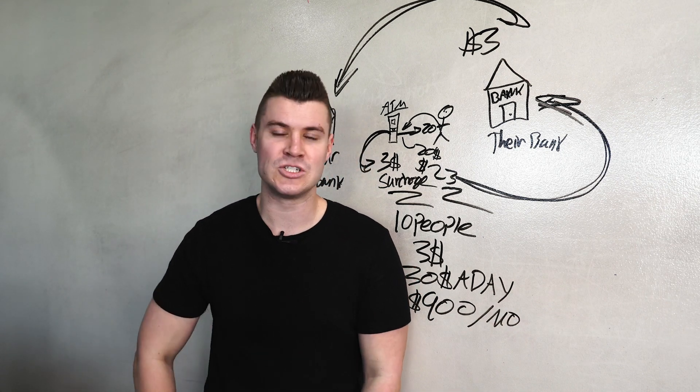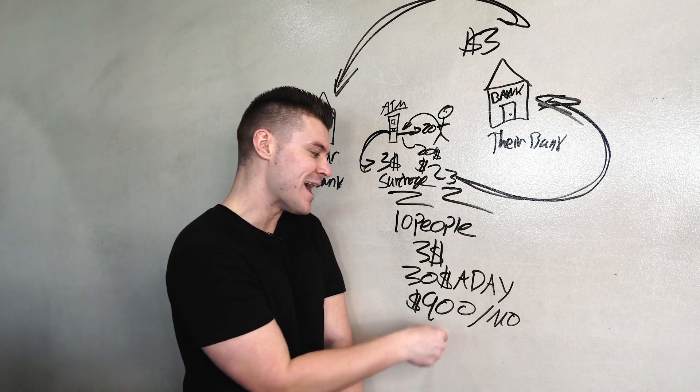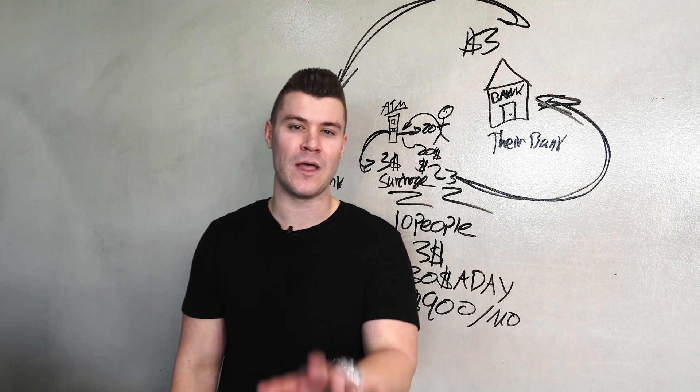Now Austin, that's only $3. Yes, but that's only one person. Let's do the math. 10 people paying $3 a transaction is $30 a day, $900 a month.